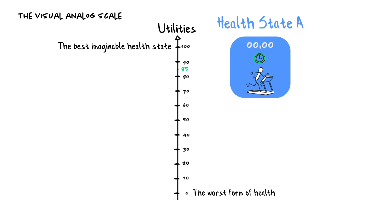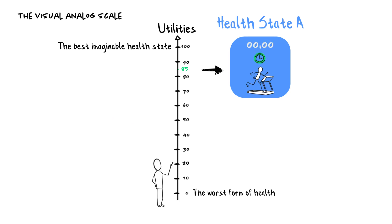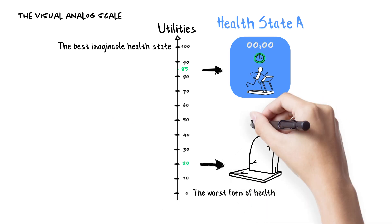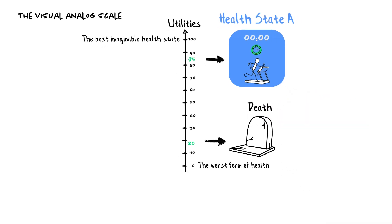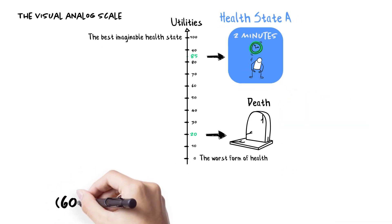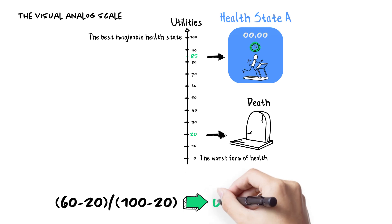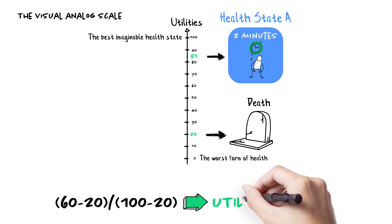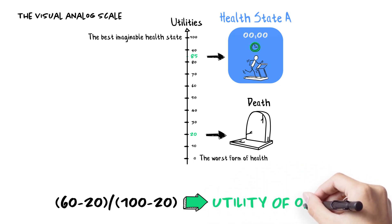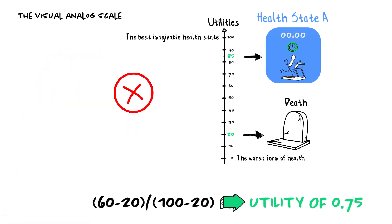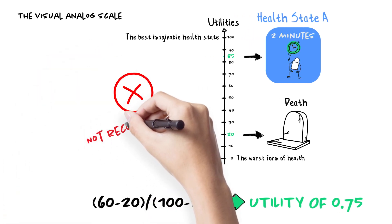In order to derive a utility, we need to rescale this value, so we need to know where people would place death. On average, people may say around 20. Then you calculate the utility as 60 minus 20 divided by 100 minus 20, which equals a utility of 0.75. It sounds simple, but it is in fact difficult for people to express meaningful values in this way, and this approach is generally not recommended.